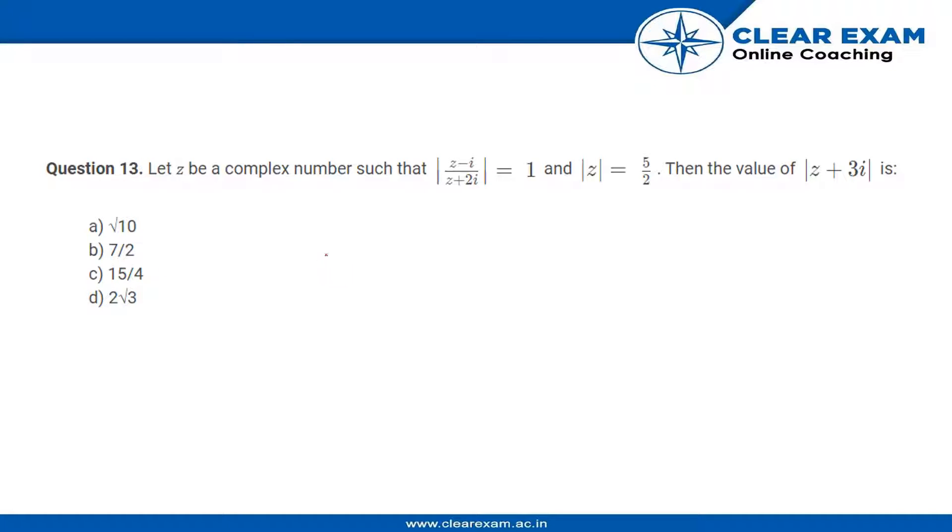These are the four options. Given this condition, we can write |z - i| = |z + 2i|. Sending the denominator to the other side, then let z = x + iy.